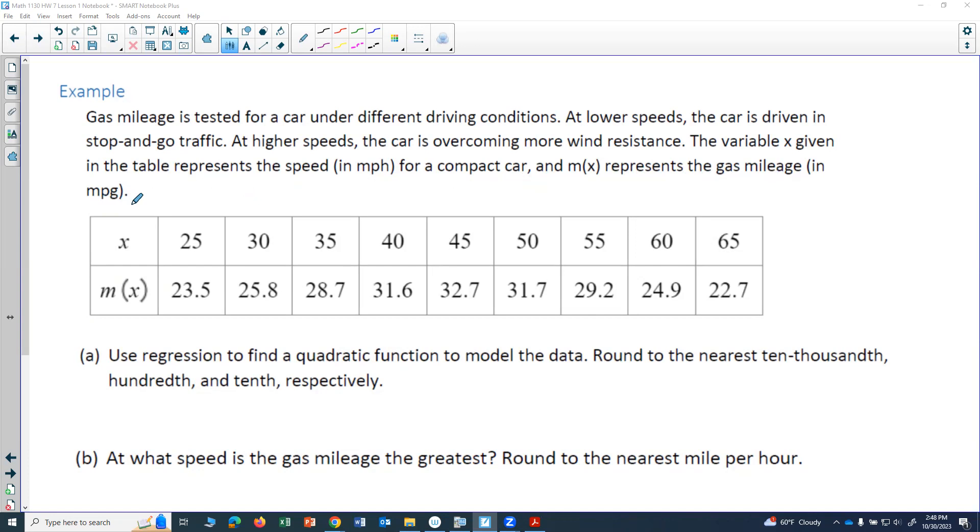So we are asked to use regression to find a quadratic function to model the data. This part is important—the fact that it's a quadratic function tells us what form we want our answer. We want our answer in the form y equals ax squared plus bx plus c. That's what it means to be quadratic. It's degree 2. And then they tell us some different rounding: round to the nearest ten-thousandth, hundredth, and tenth respectively.